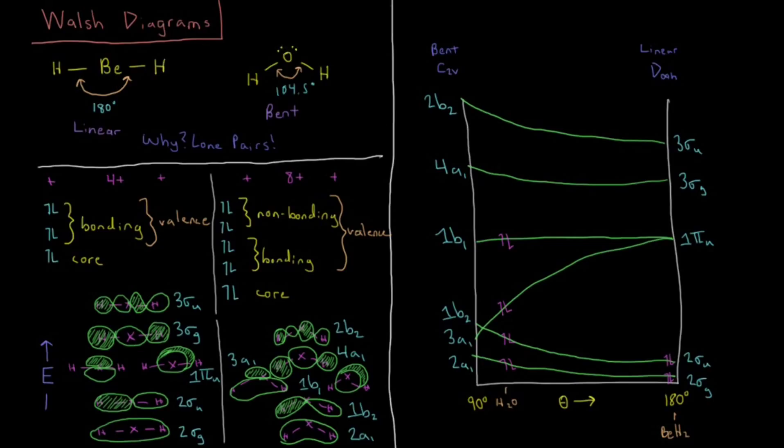So in order to answer why lone pairs make all the difference, we need to analyze the molecular orbitals and see how their energies change as a function of the shape of the molecule.